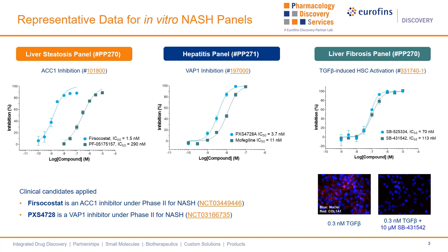The right-hand side is the phenotypic-based liver fibrosis model, in which the hepatic stellate cell line LX2 is applied. Hepatic stellate cells are highly active in inflammation and fibrosis stages. Hence, blocking hepatic stellate cell activation is also one of the strategies for treating NASH. The activation of LX2 was successfully induced by TGF-beta, where the fibrosis marker collagen type 1 alpha 1 was highly expressed. As demonstrated by high-content image analysis, two TGF-beta inhibitors successfully suppressed TGF-beta-induced hepatic stellate cell activation.